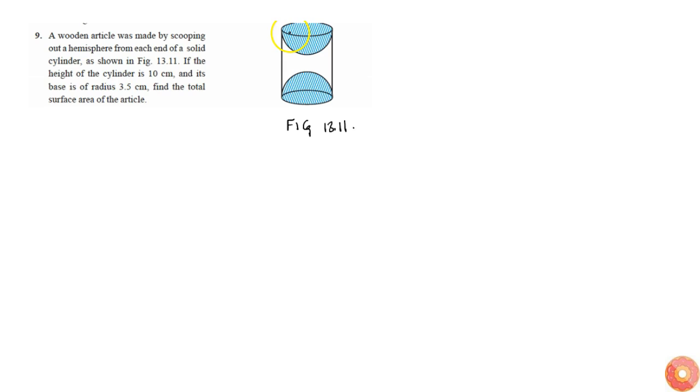Given that a wooden article was made by scooping out a hemisphere from each end of a solid cylinder. From this end a hemisphere is gone, from this end again another hemisphere is gone. We are given that...